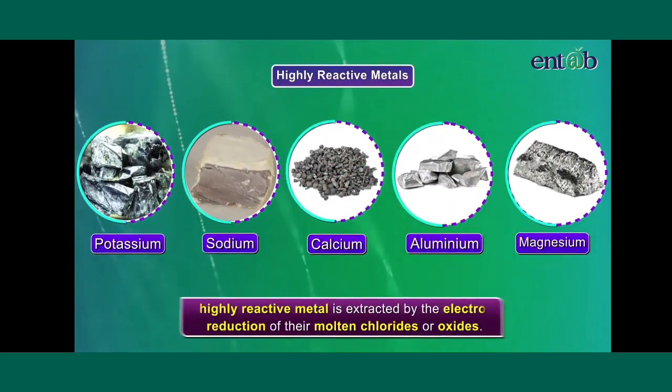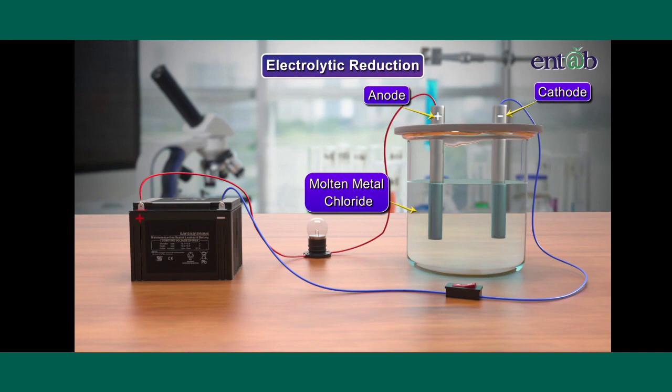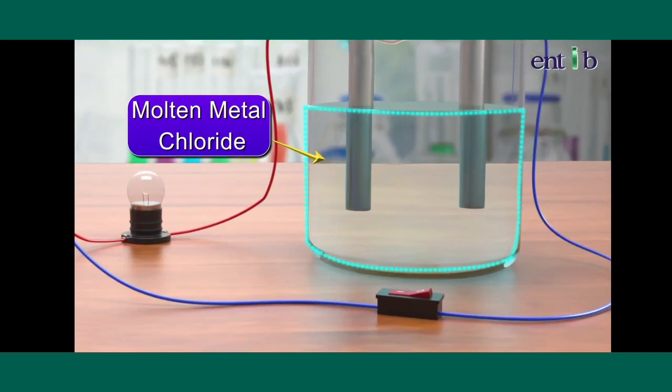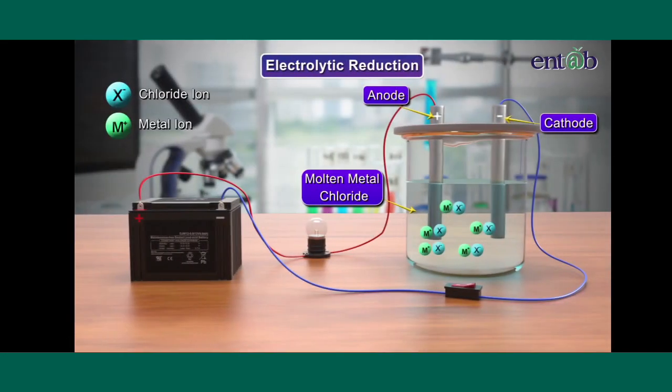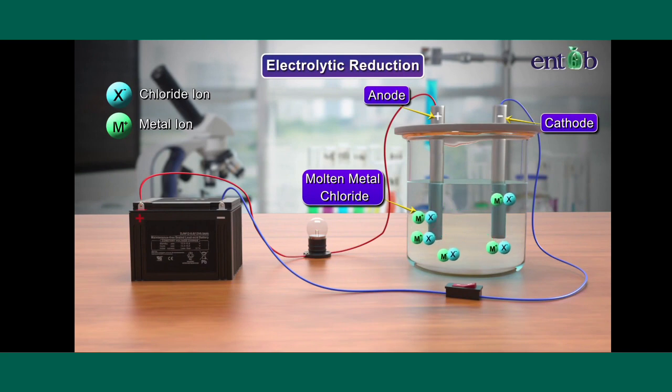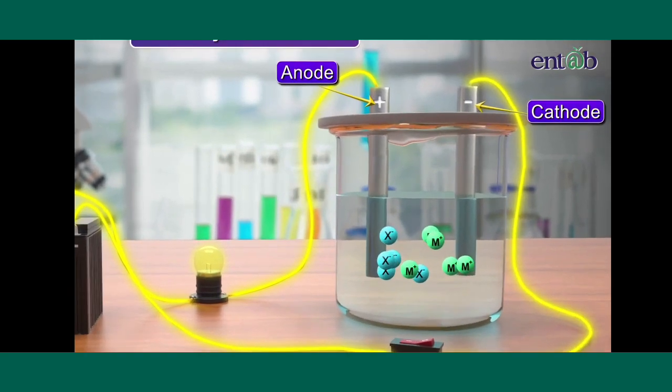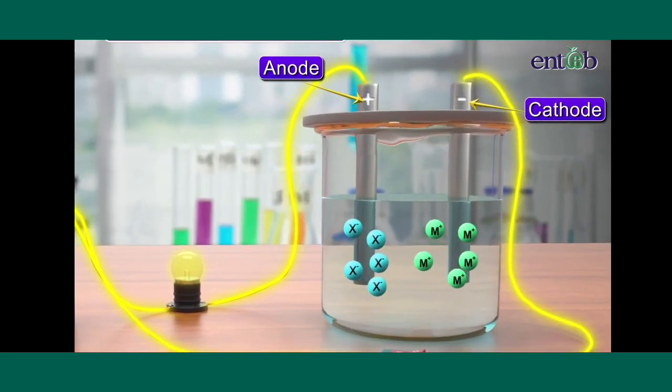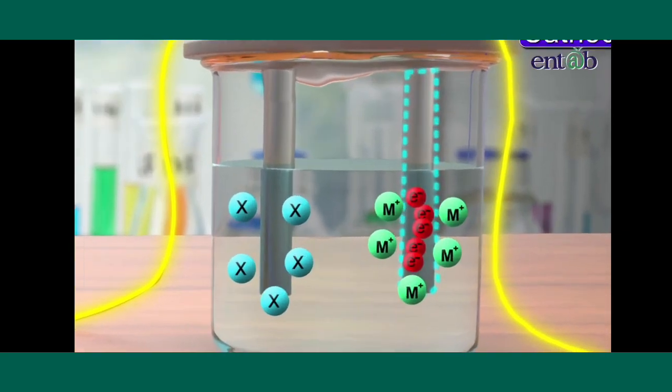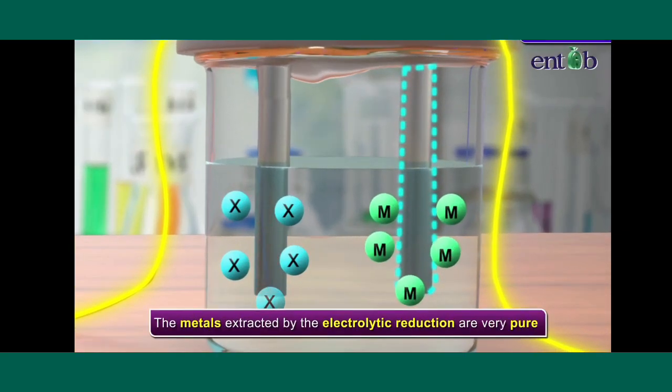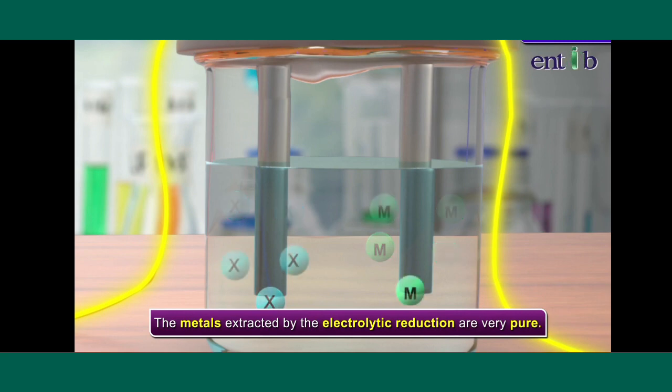The highly reactive metals are extracted by the electrolytic reduction of the molten chlorides or oxides. Electrolytic reduction is done by passing a current through the molten salts. Remember, during the electrolysis, metal is always produced at the cathode. The metals extracted by the electrolytic reduction are very pure. They do not contain any impurities.